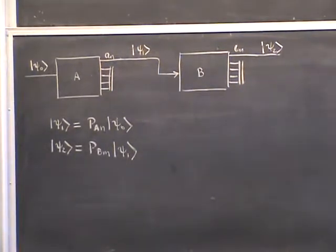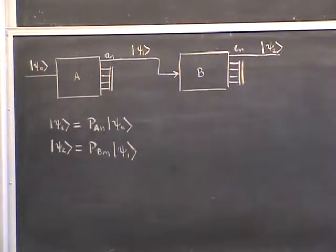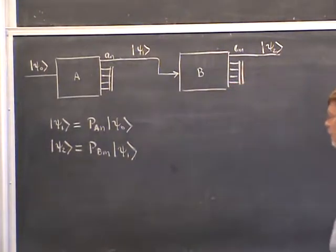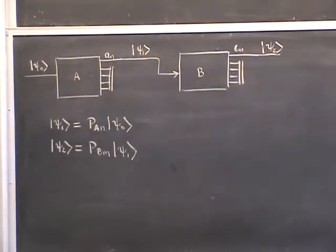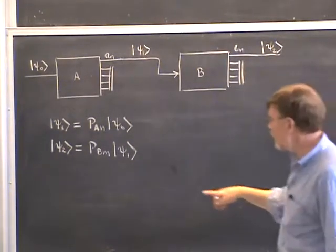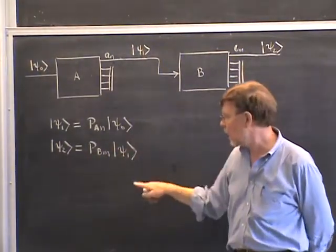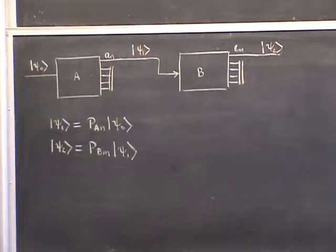We then take state psi 1 and feed it into a second measurement of a different observable B, which also has a bunch of outcomes, but we keep only the outcome B sub m. According to the postulates of quantum mechanics, the state psi 2 that emerges after measuring B with eigenvalue B sub m is given by the projection operator onto the eigenspace of operator B with eigenvalue B_m, acting on psi 1.